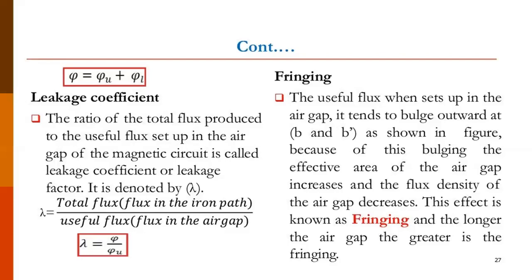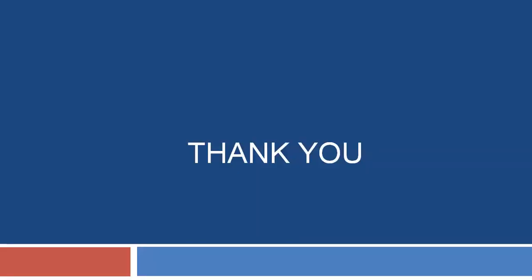Leakage, fringing, and reluctance in practice should be as small as possible — very minimal. This is possible by choosing good magnetic material and making the air gap as narrow as possible. To avoid fringing, the air gap should be avoided or made very narrow. This is all about magnetic flux linkage, flux, and magnetic fringing. This is enough for today. Thank you.